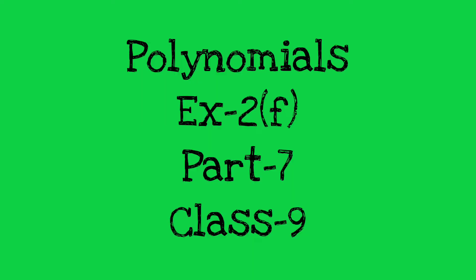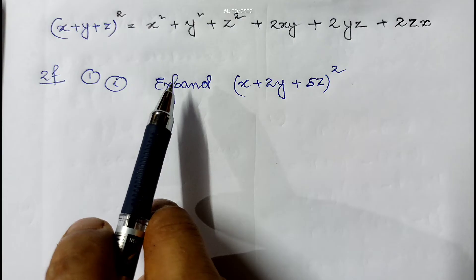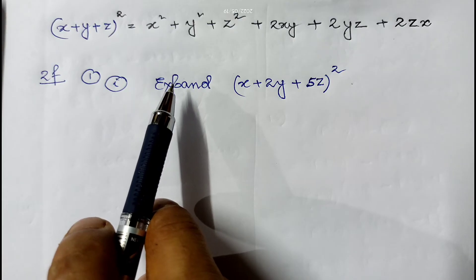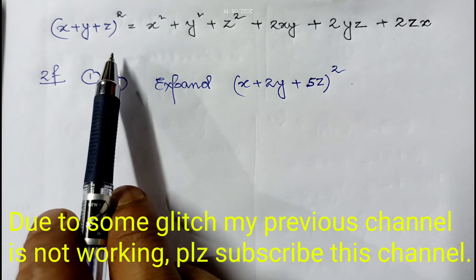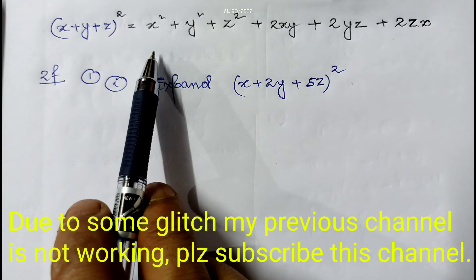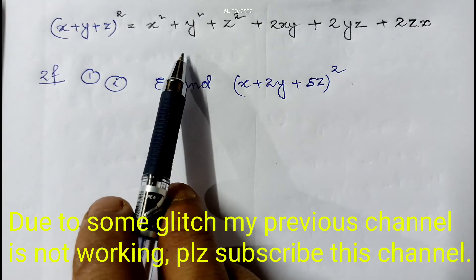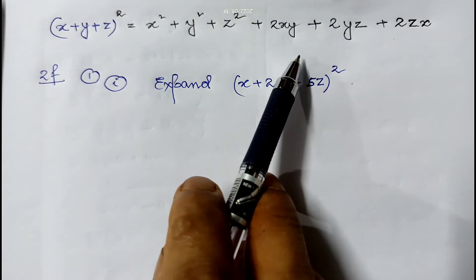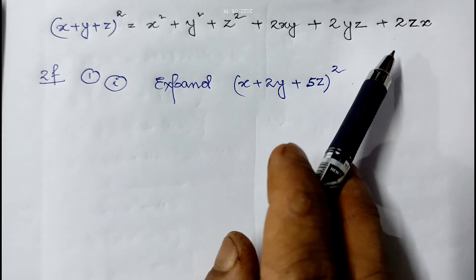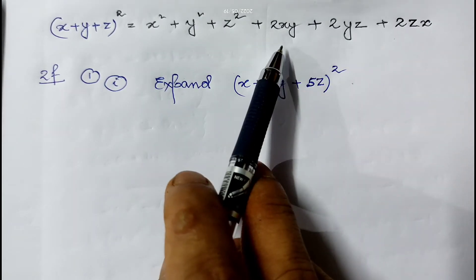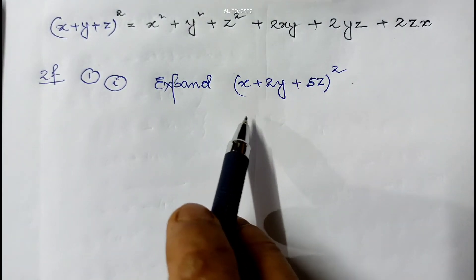Hello students. In the last video on polynomials, I did exercise 2e, and today I am going to do 2f. Exercise 2f is based on one identity: (x + y + z)² = x² + y² + z² + 2xy + 2yz + 2zx. Based on this formula we have to do the sums of 2f.